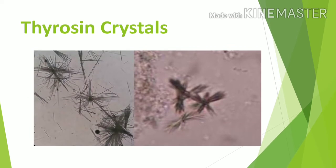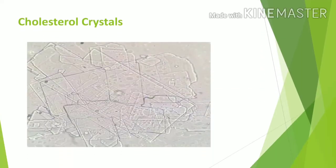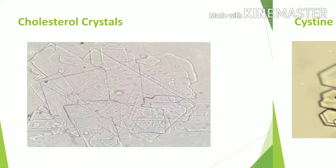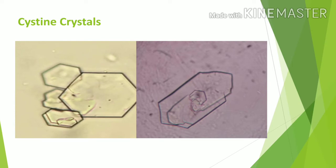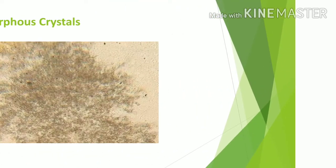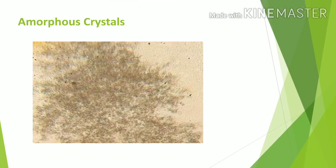Next, Tyrosine crystals — this is a needle shaped crystal. Then cholesterol crystals. The next is Cystine crystals. The next crystal is amorphous crystals — this is a sand-like crystal.